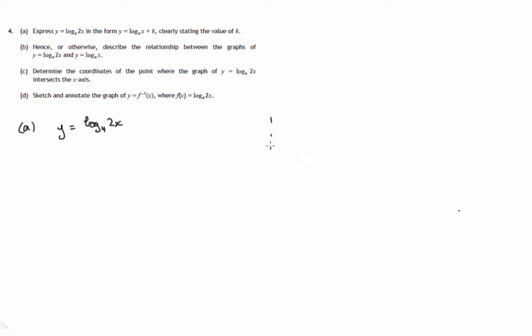The result we're going to use here is that the log of the product of two numbers, a and b for instance, would be the sum of the two logs. Log A plus log B. Because in this example here, we've got 2 times x. So we would end up with log to the base 4 of 2 plus log to the base 4 of x.